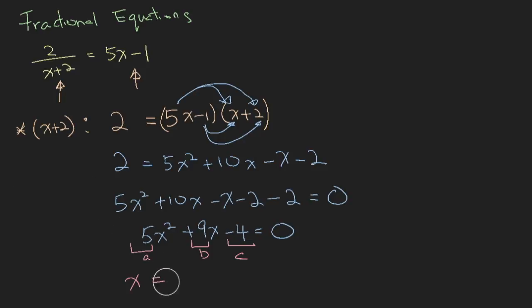So let me write the answer. X is simply equal to minus b plus or minus square root of b squared minus 4ac over 2a. So you will be left with minus 9 plus or minus.